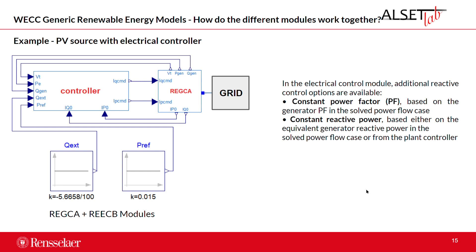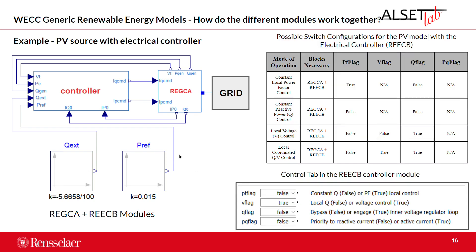This is an example of how to connect the electrical controller with the generator/converter model for the PV source. Through differences in the Boolean values of the switches, we can have different control schemes. For instance, for the PV controller, we have constant power factor control and constant reactive power control. These modes of operation have the minimum required blocks necessary; in order to have constant local power factor control, we need two modules with a specific logic configuration. An example of the control tab of the electrical controller is shown, where we have the Boolean values.